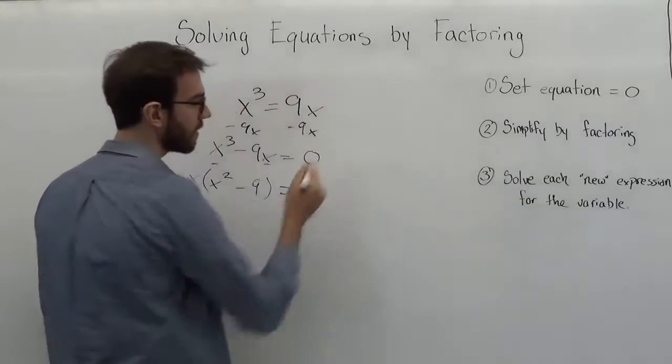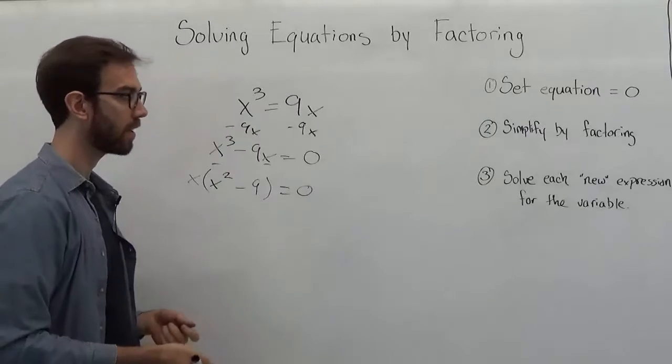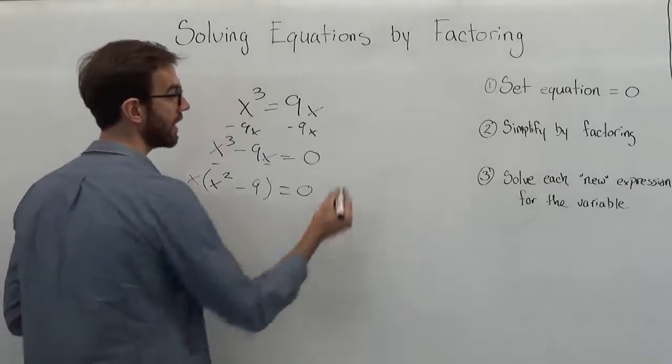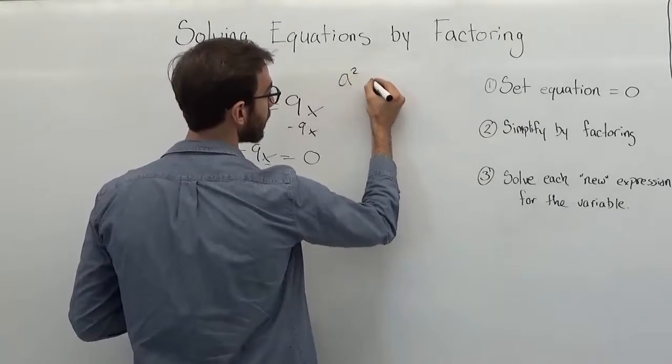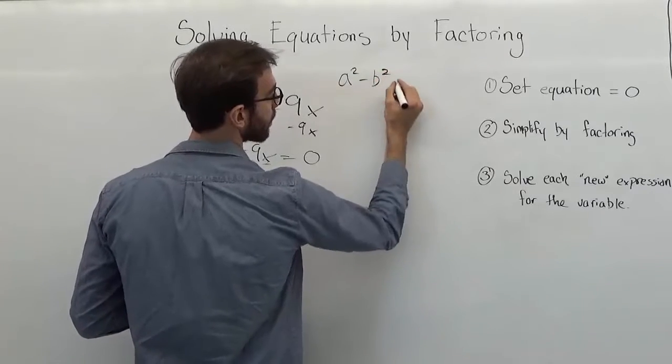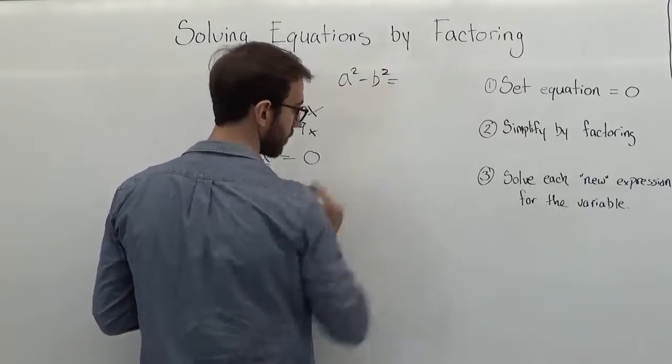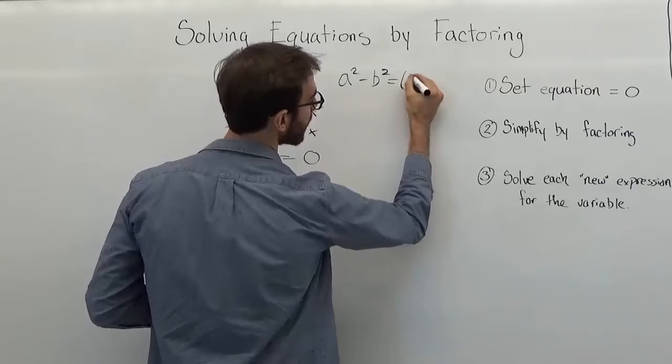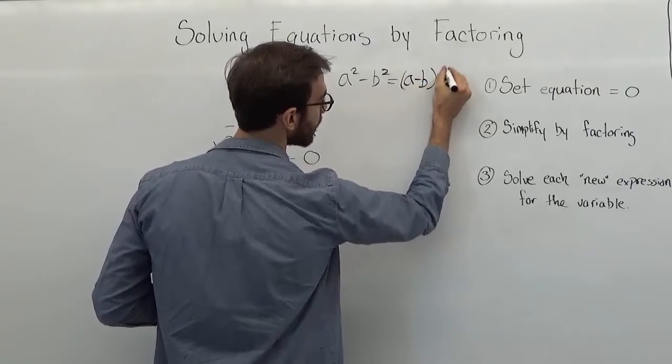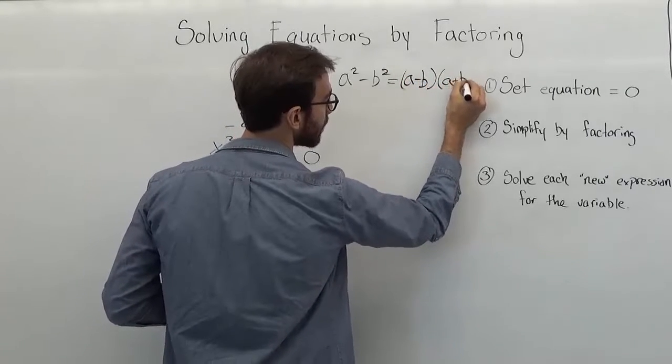We learned before that there's a formulation method for factoring. We call it the difference of squares as one of them. And that said that a squared minus b squared can be rewritten as a minus b times a plus b.